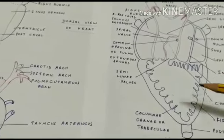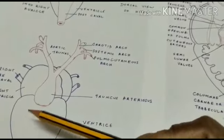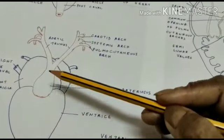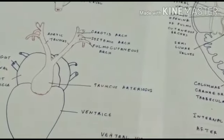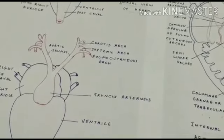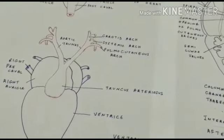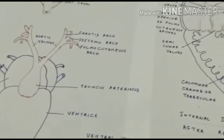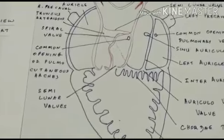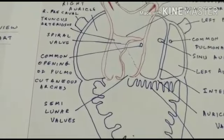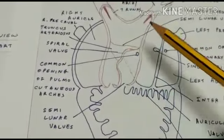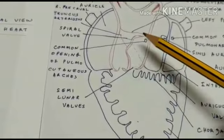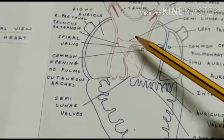On the ventral side of the right side of the ventricle is present a conical bulbous structure known as the truncus arteriosus. The opening of the ventricle into the truncus arteriosus is guarded by three pocket-like semilunar valves which prevent the backflow of blood. Internally, the truncus arteriosus is divided into two parts: the proximal part is known as the pylangium and the distal part is referred to as the synangium.